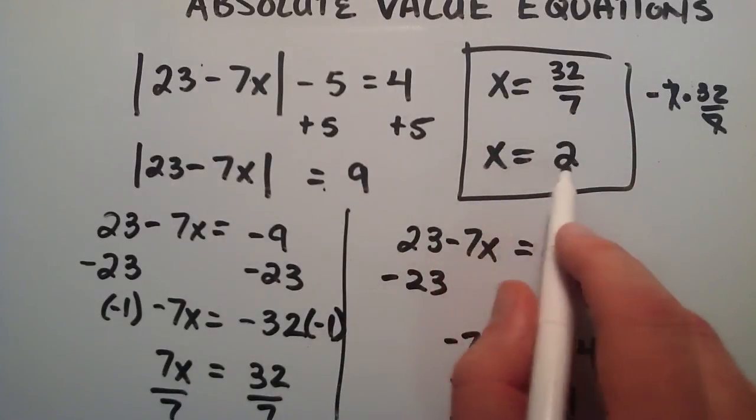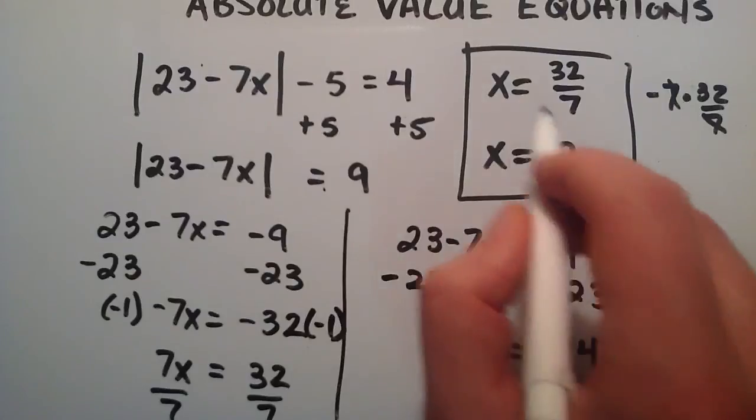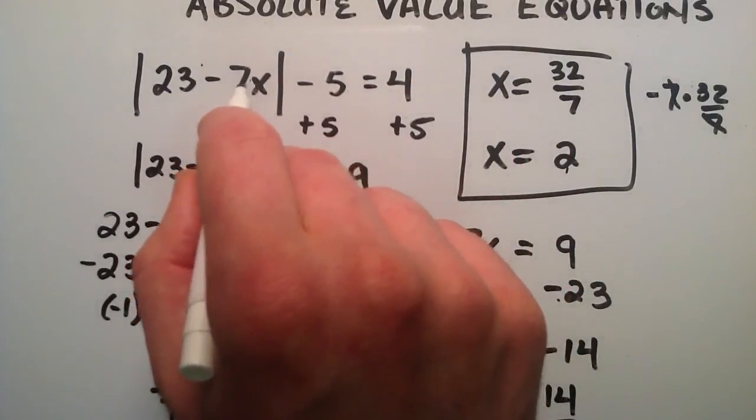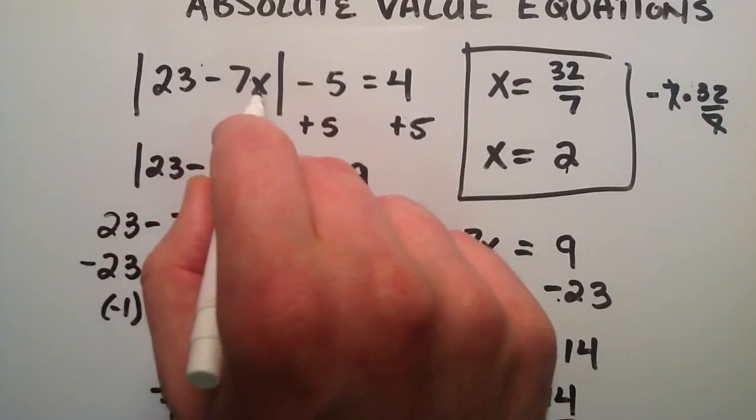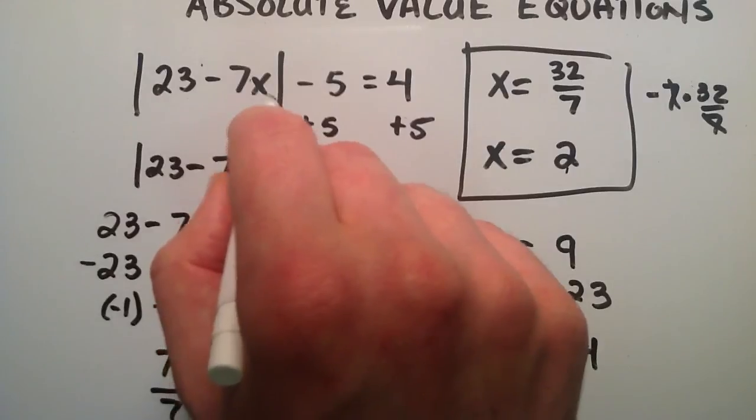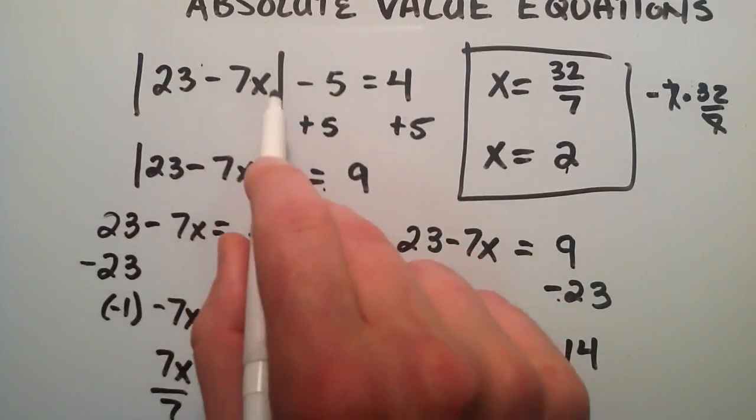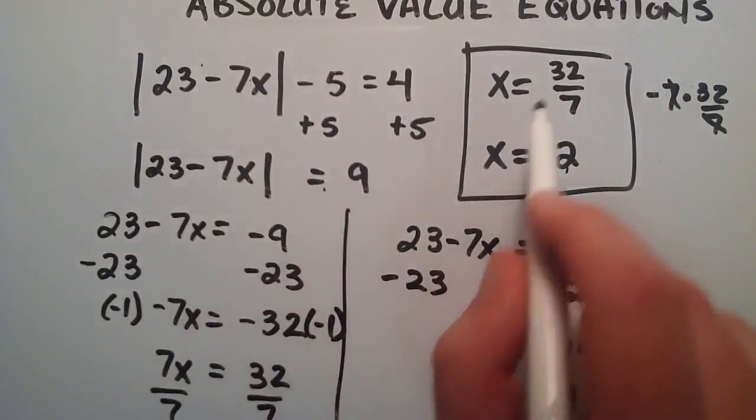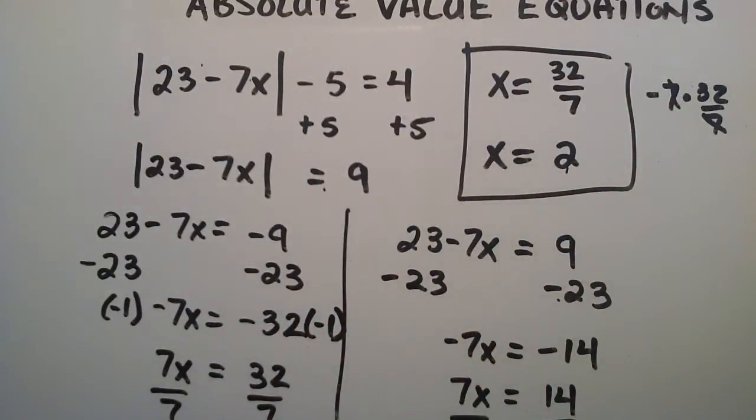So now let's look at it with x equals 2. So plugging in 2 for x here, we just have 7 times 2 is 14. So we're subtracting 14. 23 minus 14 is a positive 9. Absolute value of positive 9 is still positive 9. And then we have 9 minus 5 equals 4. So both of these two solutions here, both of them work.